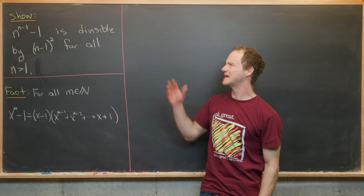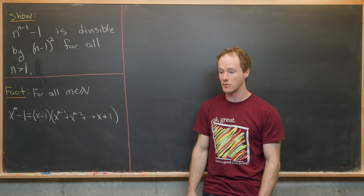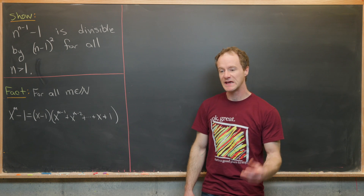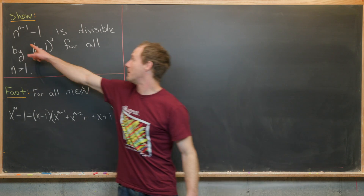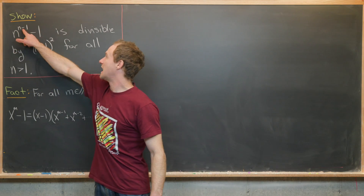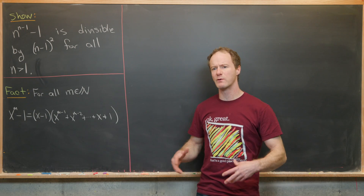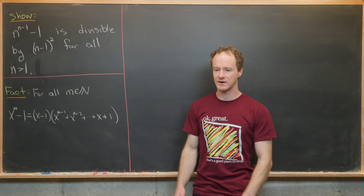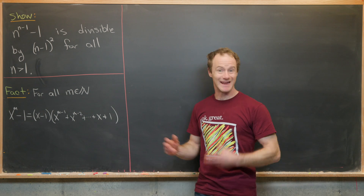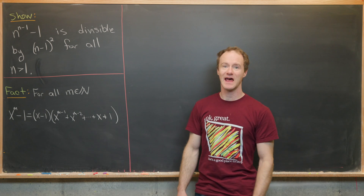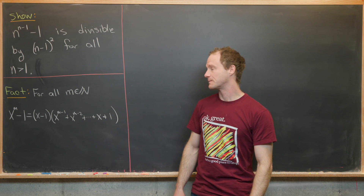The big hint that we probably want to look at this like a polynomial is the fact that we've got our variable as a base and in the exponent. But if we replace one of those appearances of our variable n with an indeterminate x, then we can maybe factor it a little bit easier.